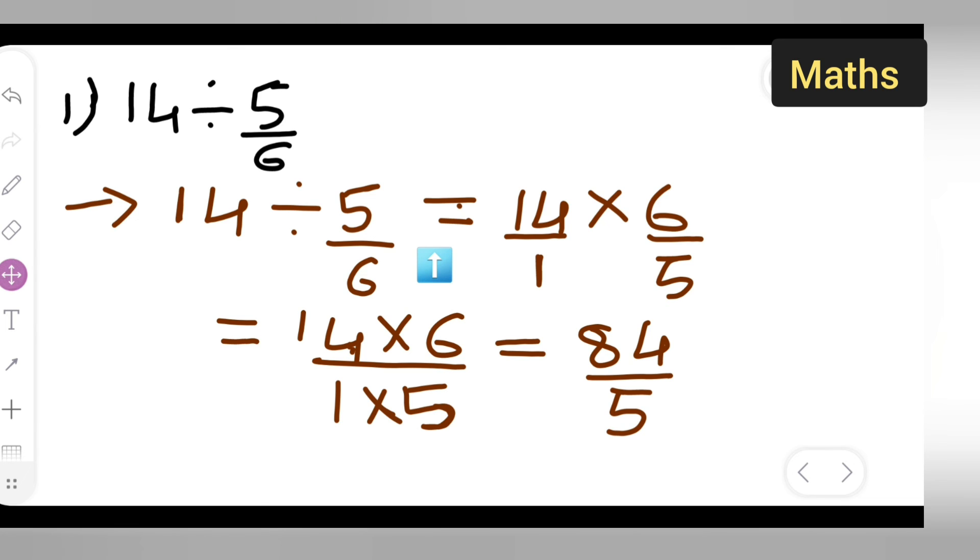So, nothing is getting cancelled means you will have to multiply. 14, 6 are 84, 5 ones are 5 here.